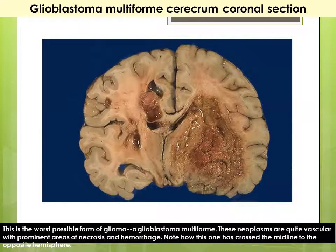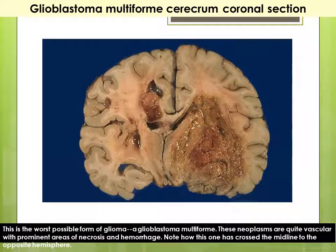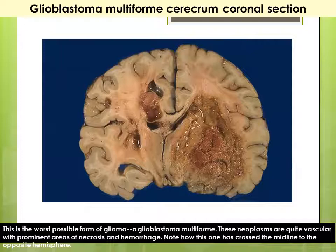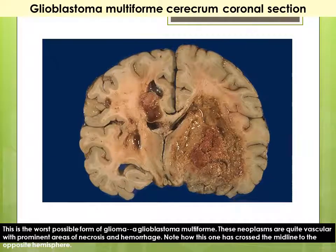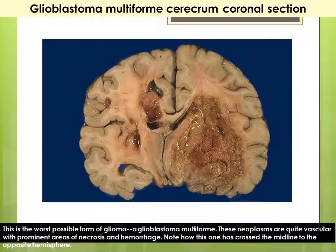In this gross picture, the cut surface of the brain tissue shows a mass on the right side of the cerebral hemisphere — a large mass with ill-defined borders. Some areas of necrosis appear glistening. This represents the worst possible form of glioma: glioblastoma multiforme. The neoplasm has acquired vesicular appearance with prominent areas of necrosis and hemorrhage, and has crossed the midline into the opposite side, with small areas of necrosis and hemorrhage present there as well.